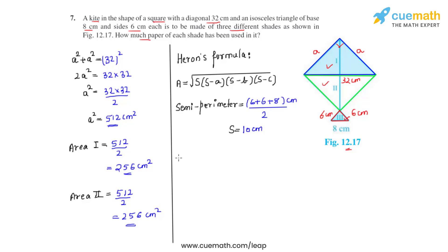Now that we have found out the semi-perimeter, let's find the area of the third region, which will be equal to √(10 × (10-6) × (10-6) × (10-8)) centimeter squared. This on calculation comes to √(10 × 4 × 4 × 2) centimeter square. This on further calculation comes as 8√5 centimeter square.